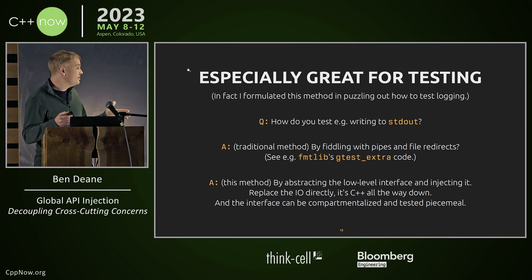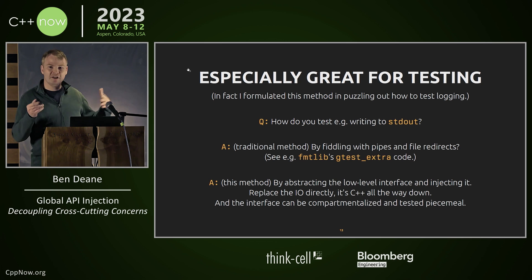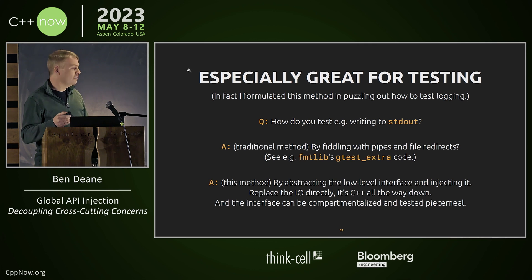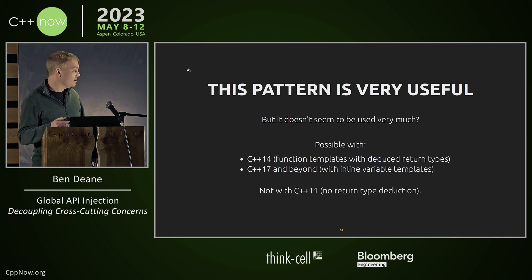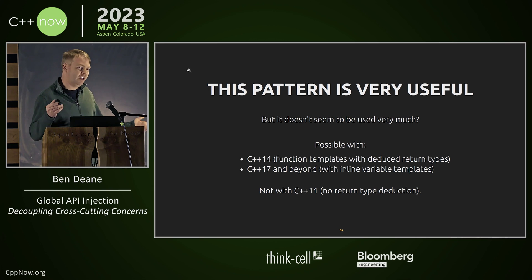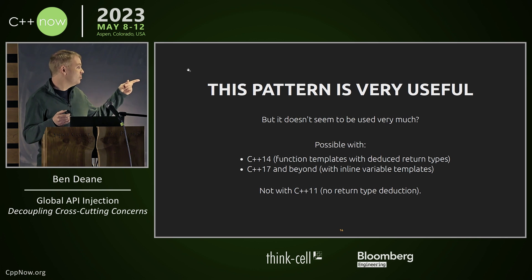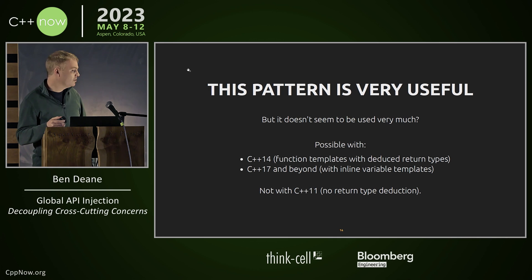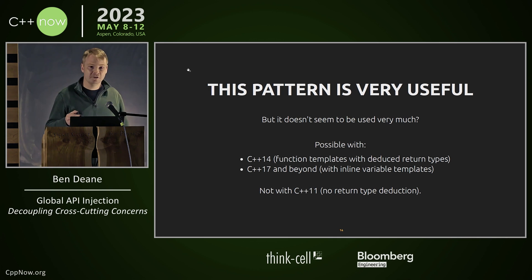This is the problem I was originally trying to solve: how do I test something that writes to stdout? I looked at what fmtlib does — it fiddles with pipes and redirects. I didn't want to do that. This method just lets me do C++ all the way down, and the interface can be compartmentalized. I haven't seen it used very much. It's actually possible with C++14 because you can do function templates instead of variable templates, and as long as you have return type deduction, the specialization works. It doesn't work in C++11 because there's no return type deduction.